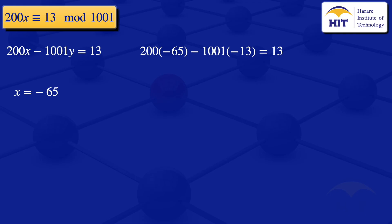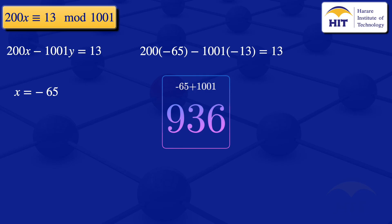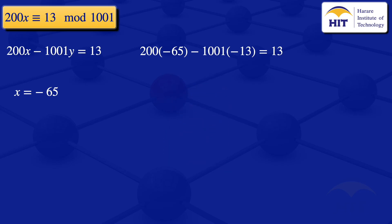Since we need 0 < x < 1001 and −65 is negative, we add the modulus 1001: −65 + 1001 = 936. So our incongruent solution is x = 936.